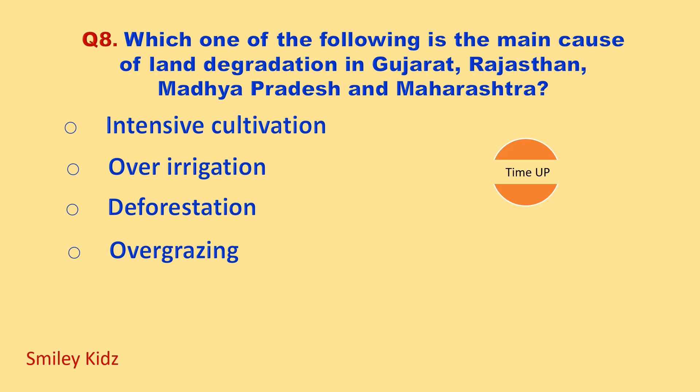Time up. The correct answer is over-grazing. Over-grazing is the main cause of land degradation in Gujarat, Rajasthan, Madhya Pradesh and Maharashtra.